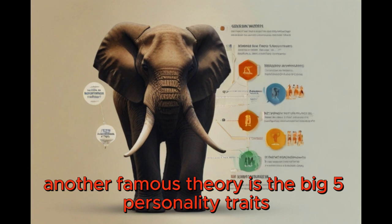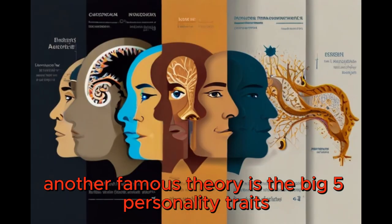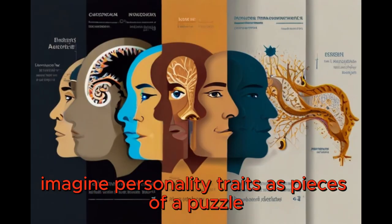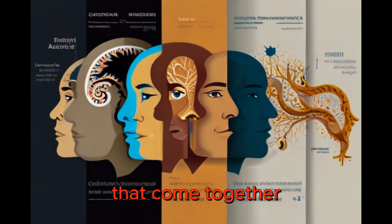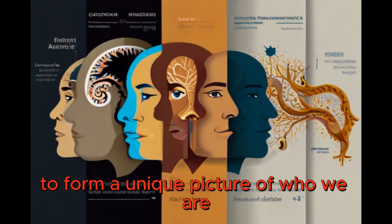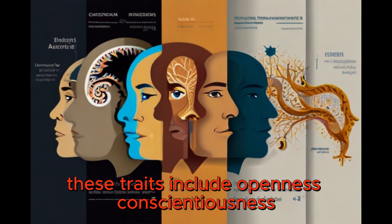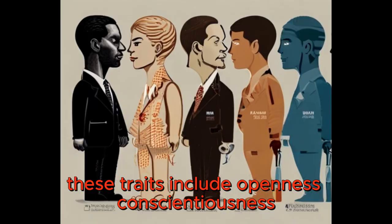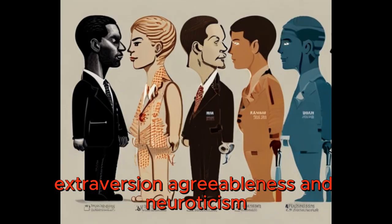Another famous theory is the Big Five personality traits. Imagine personality traits as pieces of a puzzle that come together to form a unique picture of who we are. These traits include openness, conscientiousness, extroversion, agreeableness, and neuroticism.